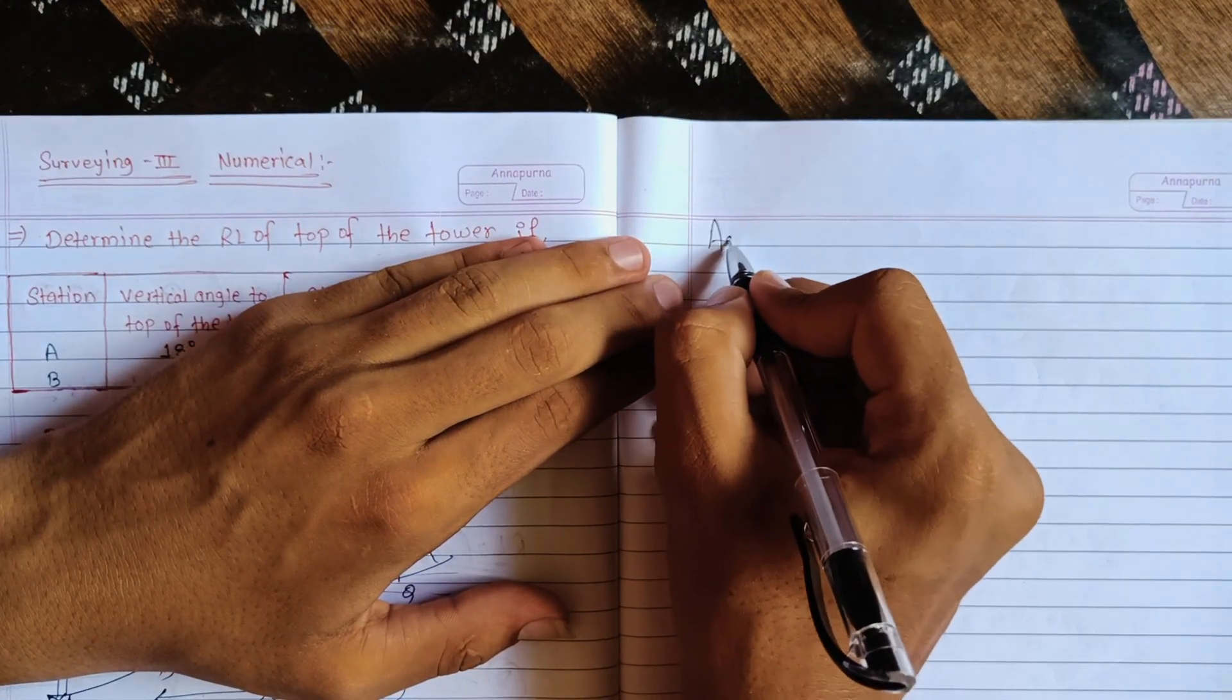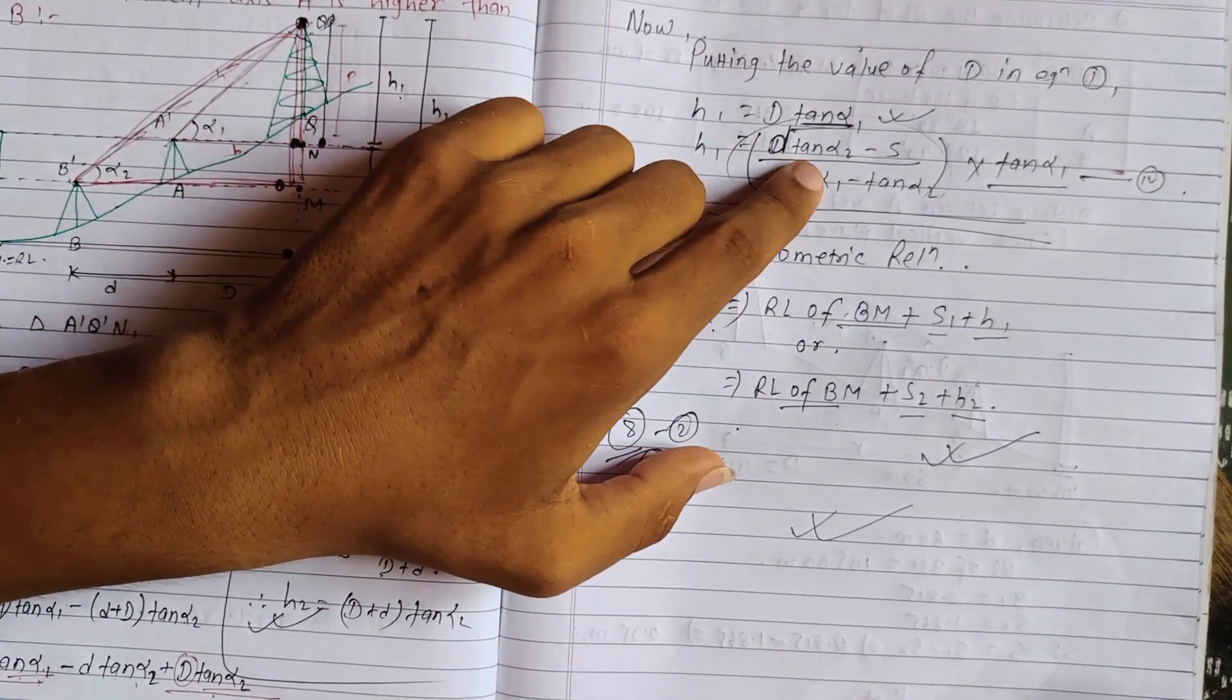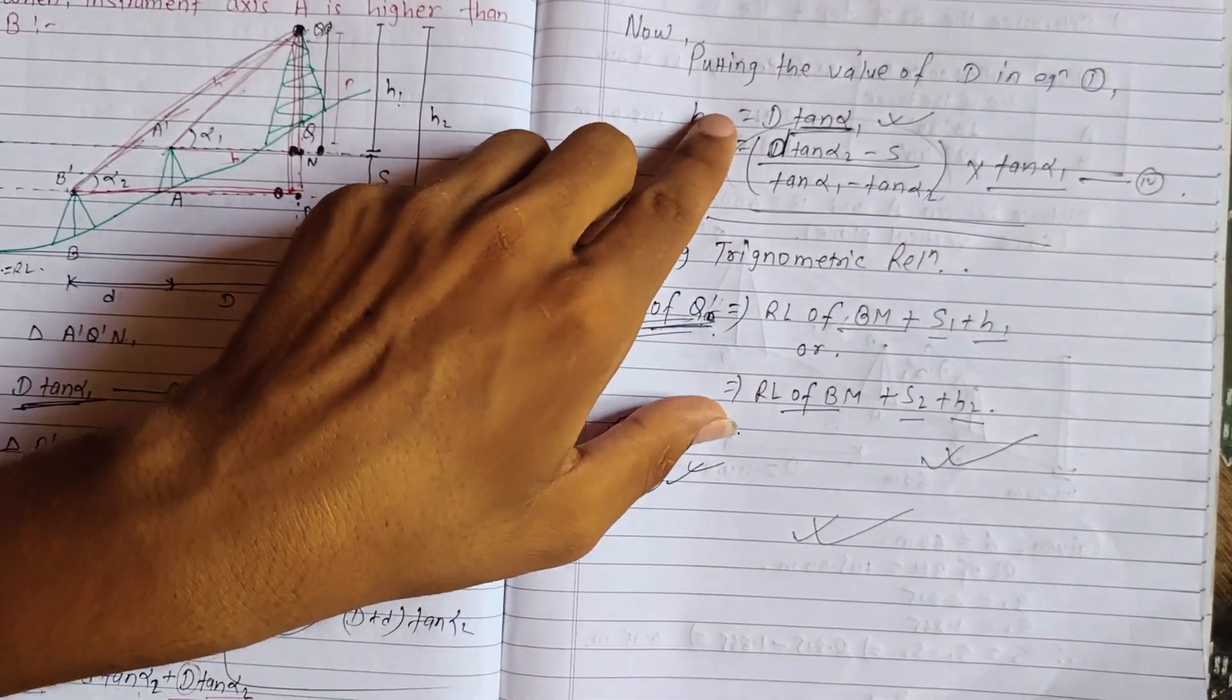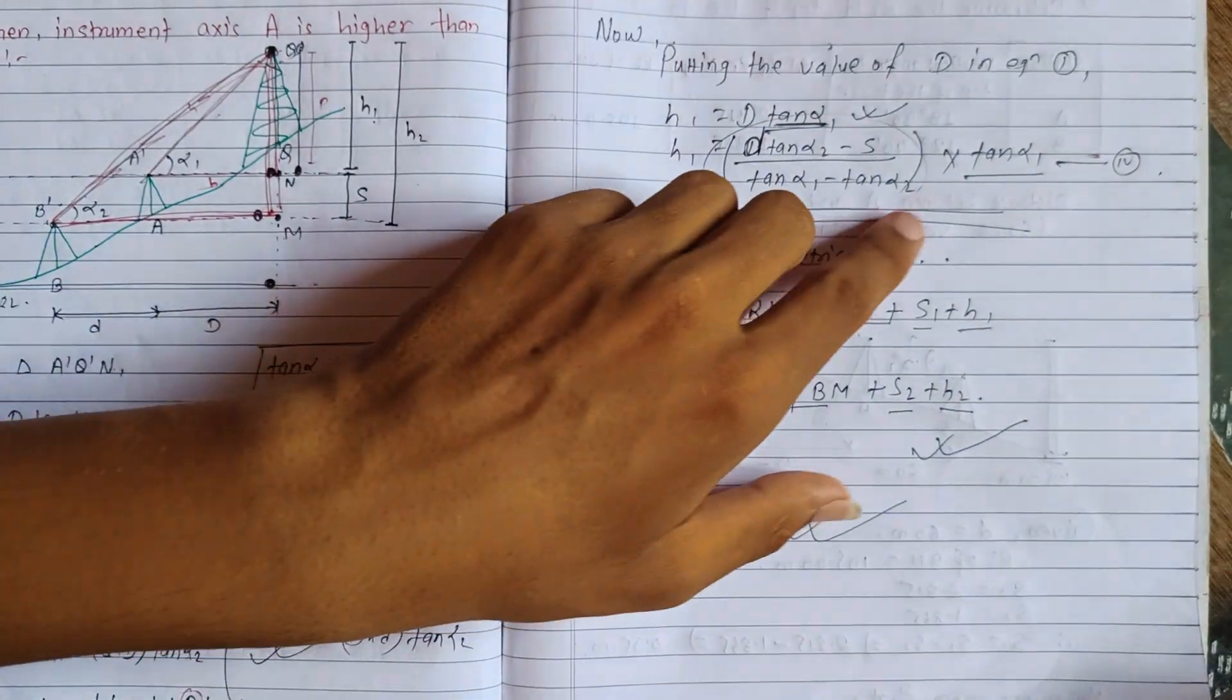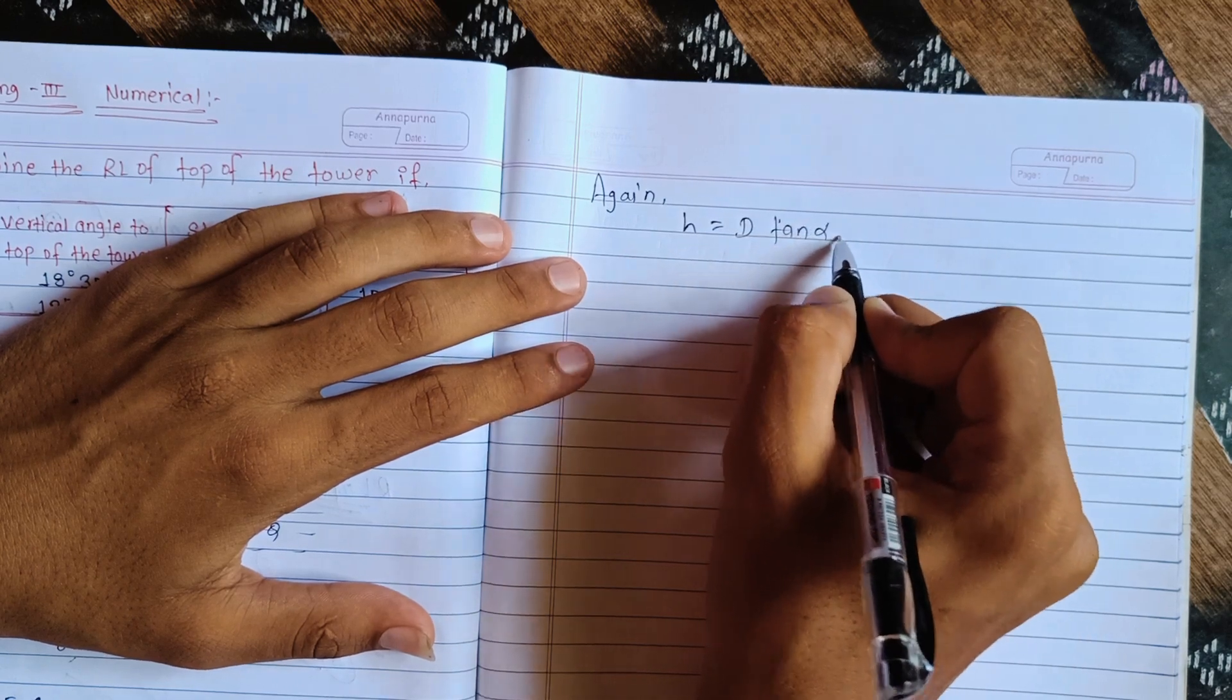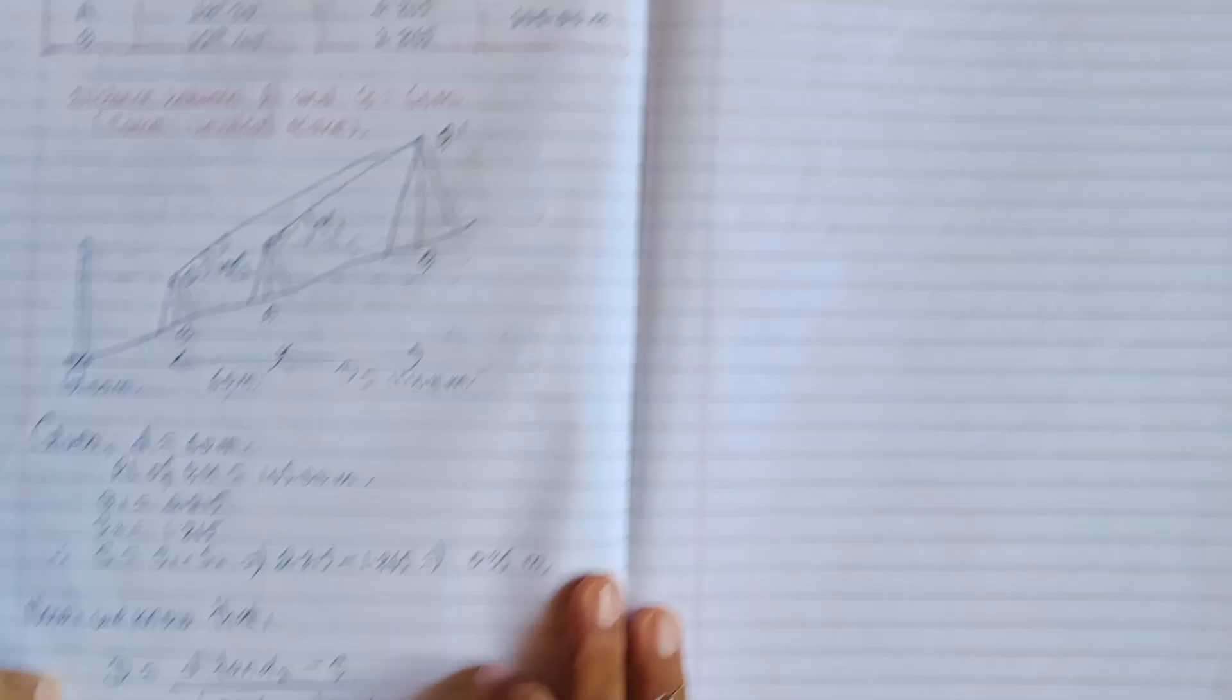Let me use the correct formula again. The formula is D times tan(alpha2) minus S, divided by tan(alpha1) minus tan(alpha2), times tan(alpha1). This is the corrected formula using tan(alpha1).